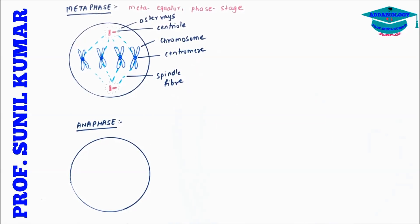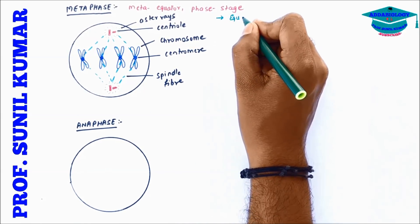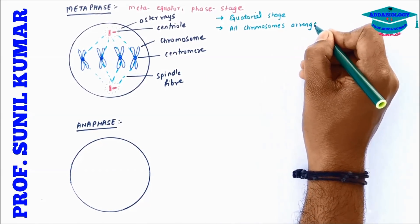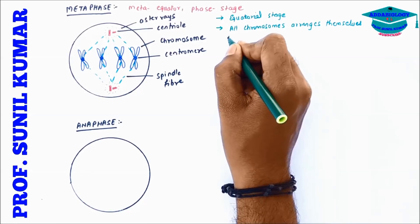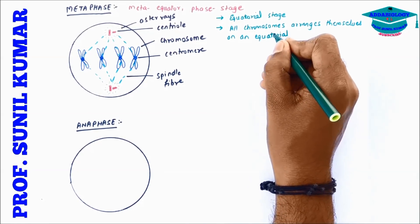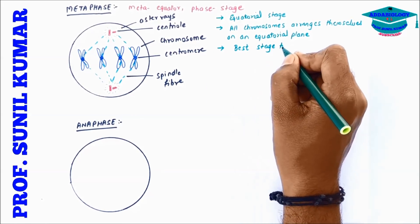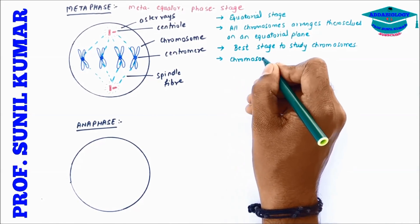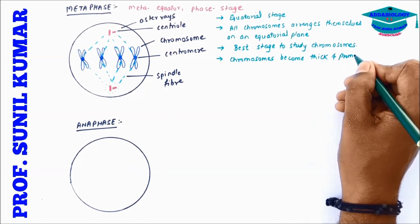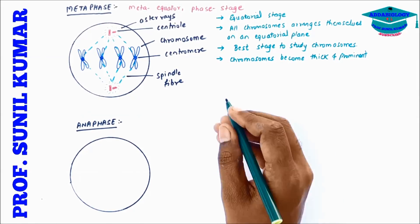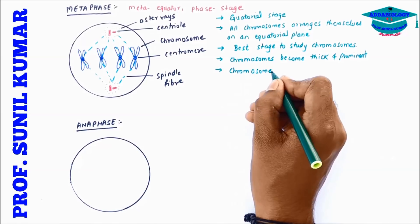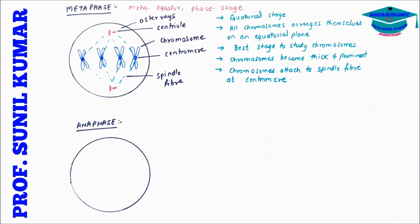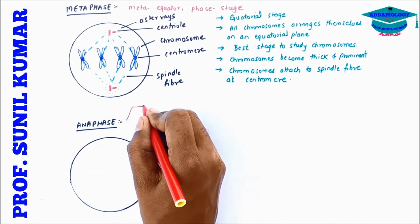Metaphase is the best stage to study chromosomes because here the chromosomes become more condensed, thick, and prominent. For an exam, you should write: it is an equatorial stage; all chromosomes arrange themselves on an equatorial plane; it is the best stage to study chromosomes as they become more thick and prominent; chromosomes are attached to spindle fibers at the centromere.